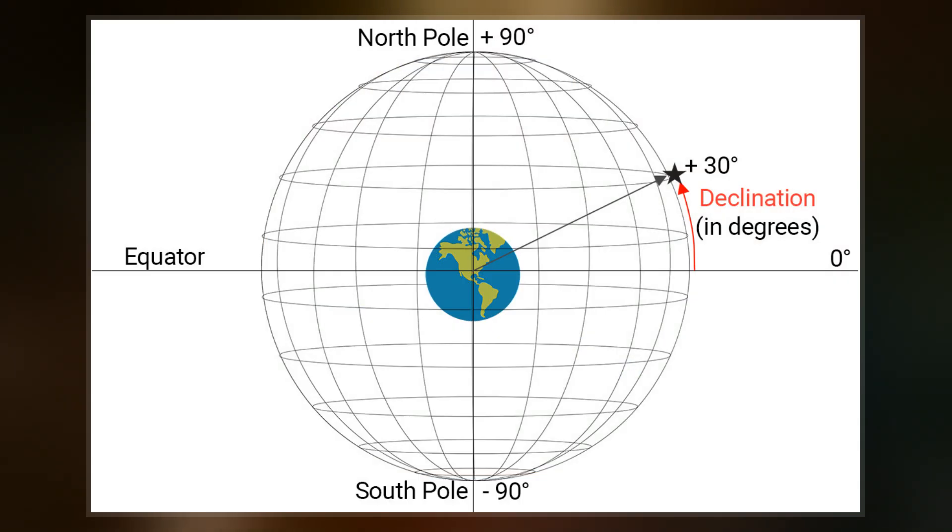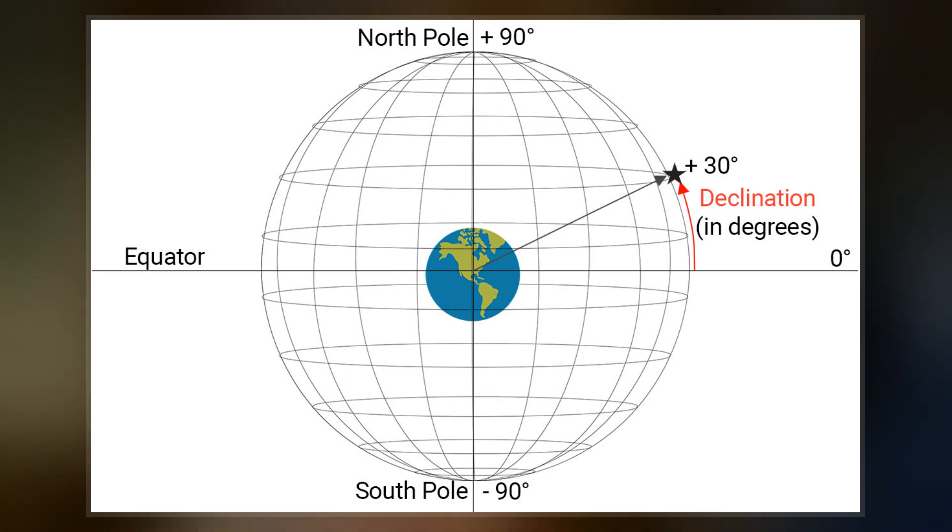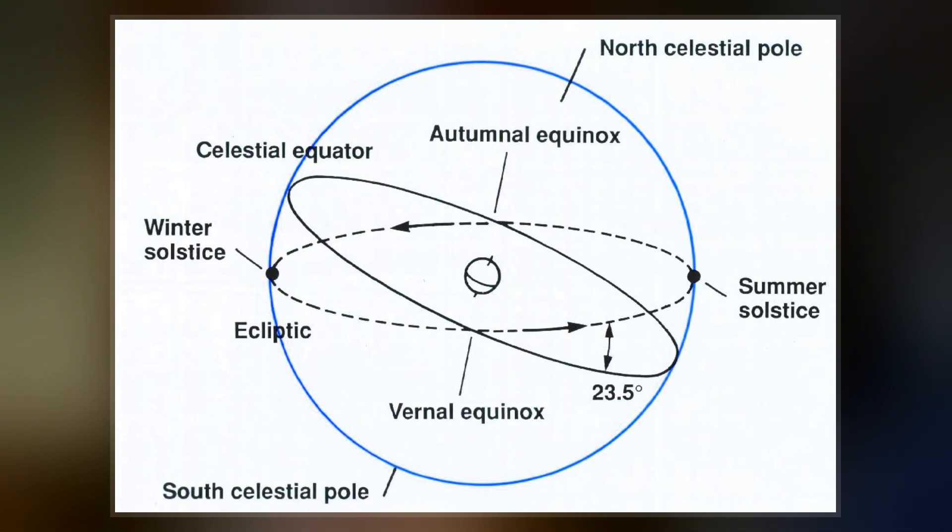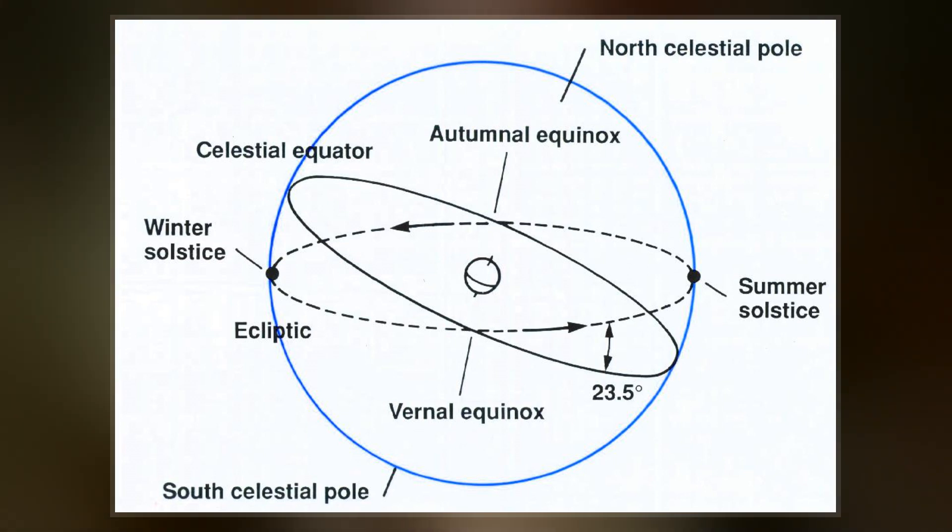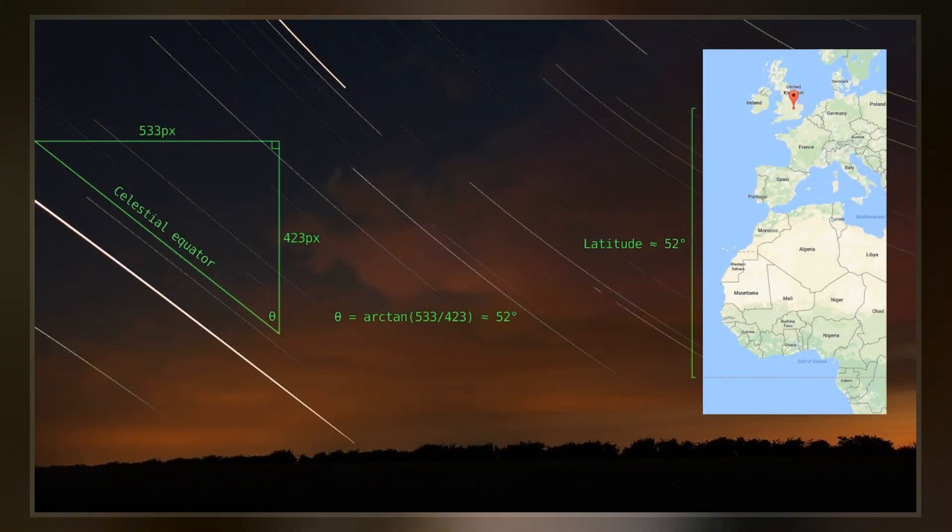Due to Earth's axial tilt, the celestial equator is currently inclined by about 23.44 degrees with respect to the ecliptic. The inclination has varied from about 22.0 degrees to 24.5 degrees over the past 5 million years.